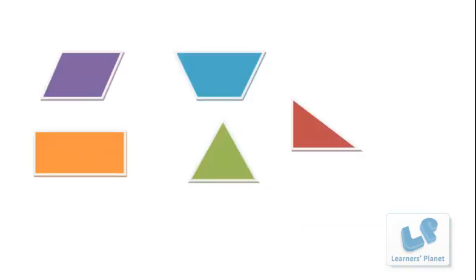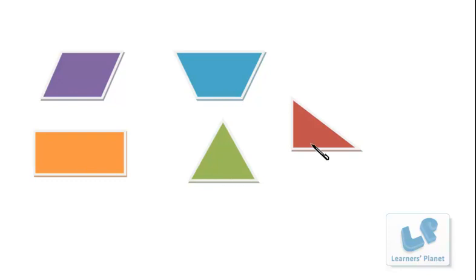Friends, in our session of polygons, we have discussed about various shapes and sizes. We discussed about parallelogram, trapezium, rectangles, equilateral triangles and right-angled triangles. In this session, we are to calculate their areas.